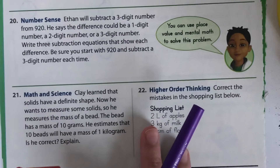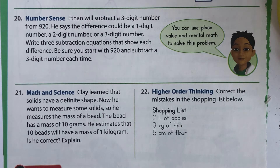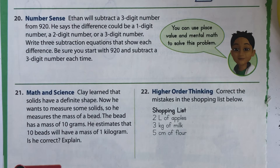Ethan will subtract a three-digit number from 920. He says the difference could be a one-digit number, a two-digit number, or a three-digit number. Write three subtraction equations that show each difference. Be sure you start with 920 and subtract a three-digit number each time. You can use place value and mental math to help solve this problem.